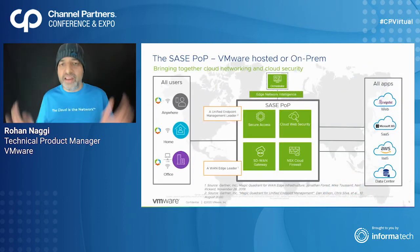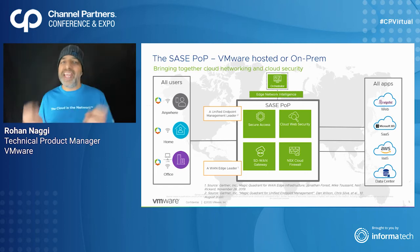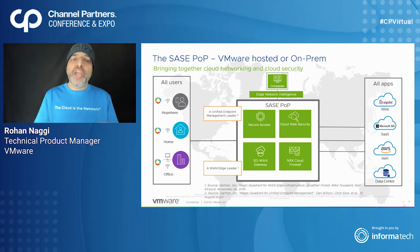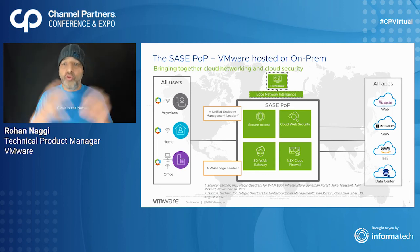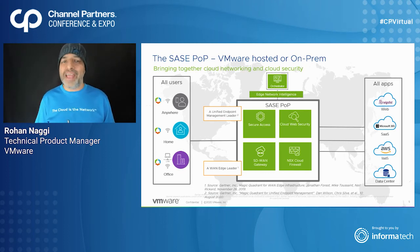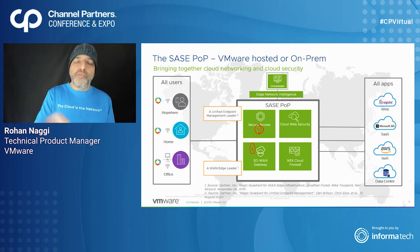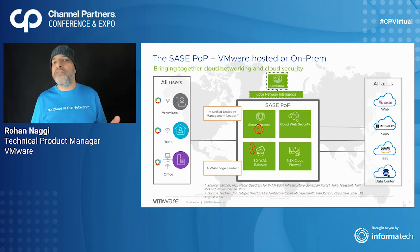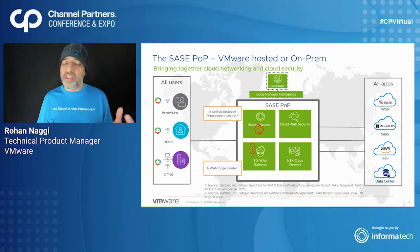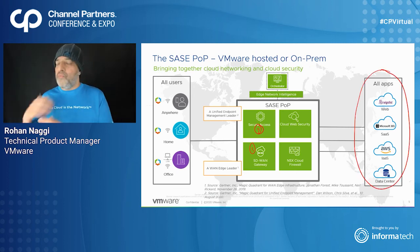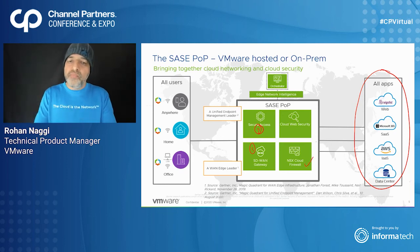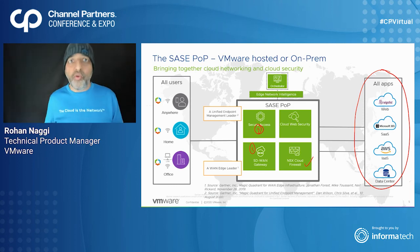Now let's take a look at the VMware SASE solution. The SASE PoP has four key components. First, the SD-WAN gateway, used for transportation with a global presence around the globe, giving secure optimized access to SASE applications. Second, secure cloud, which takes care of users working from anywhere on managed or unmanaged bring-your-own devices, accessing internet, SASE applications, or private cloud resources. Third, firewall as a service — the cloud firewall.